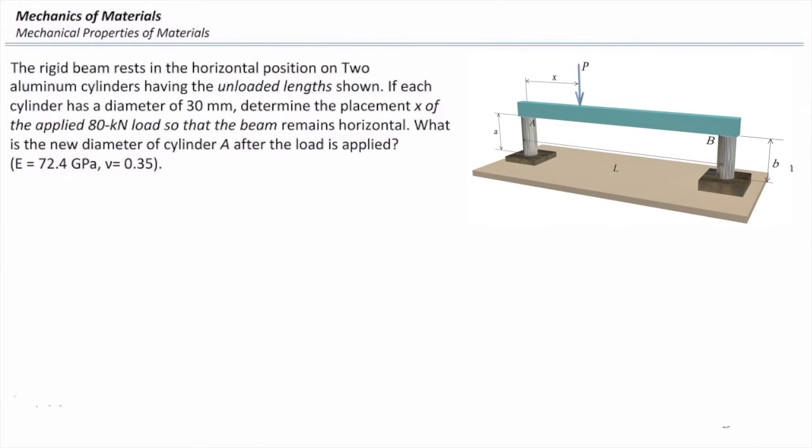If each cylinder has a diameter of 30 mm, determine the placement X of the applied 80 kilonewton load so that the beam remains horizontal after applying the load.